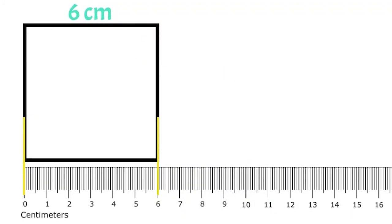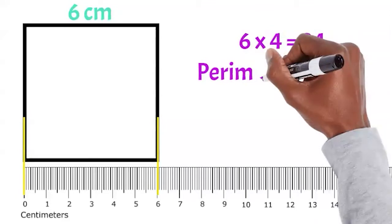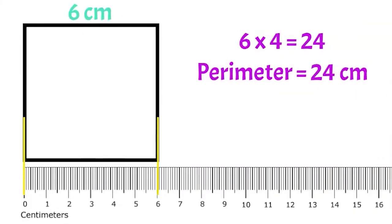Remember that since a square has four equal sides, we can just multiply that side length by four to find the perimeter. Six times four equals 24. This square has a perimeter of 24 centimeters.